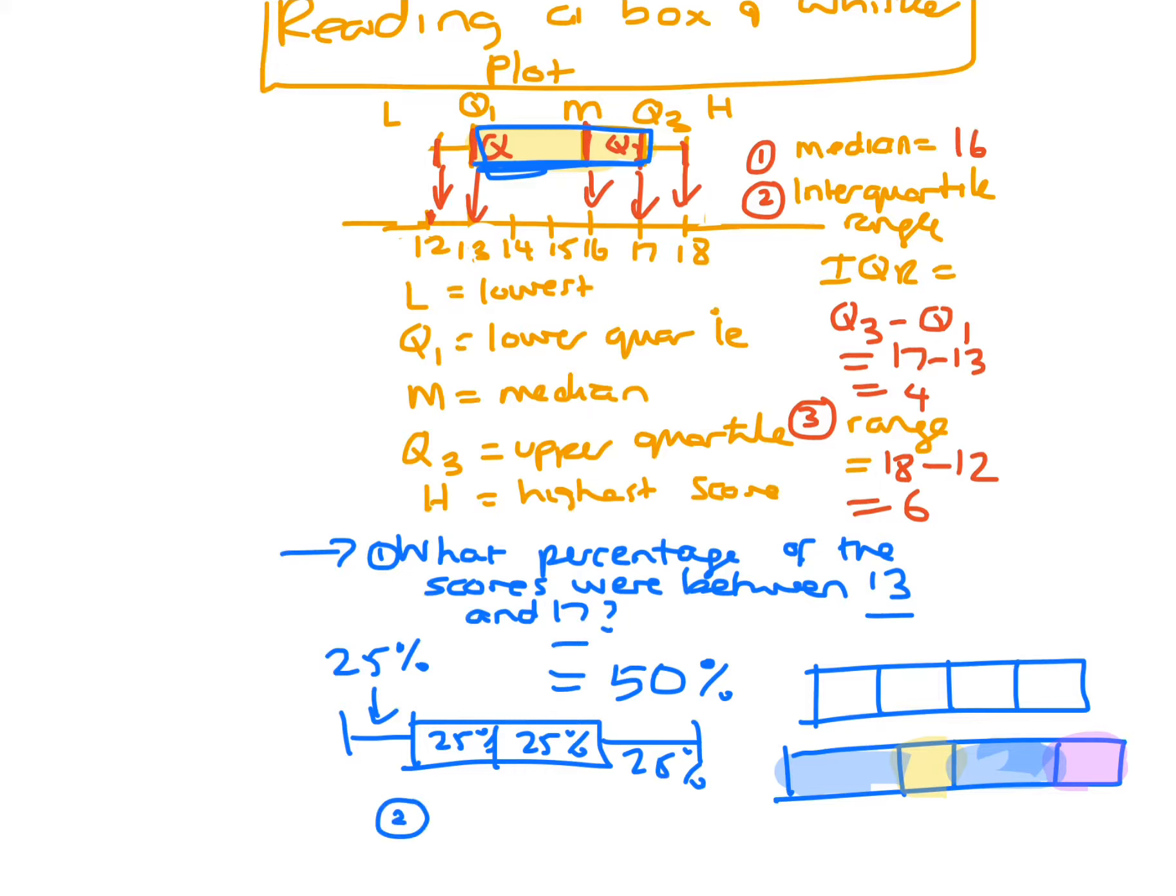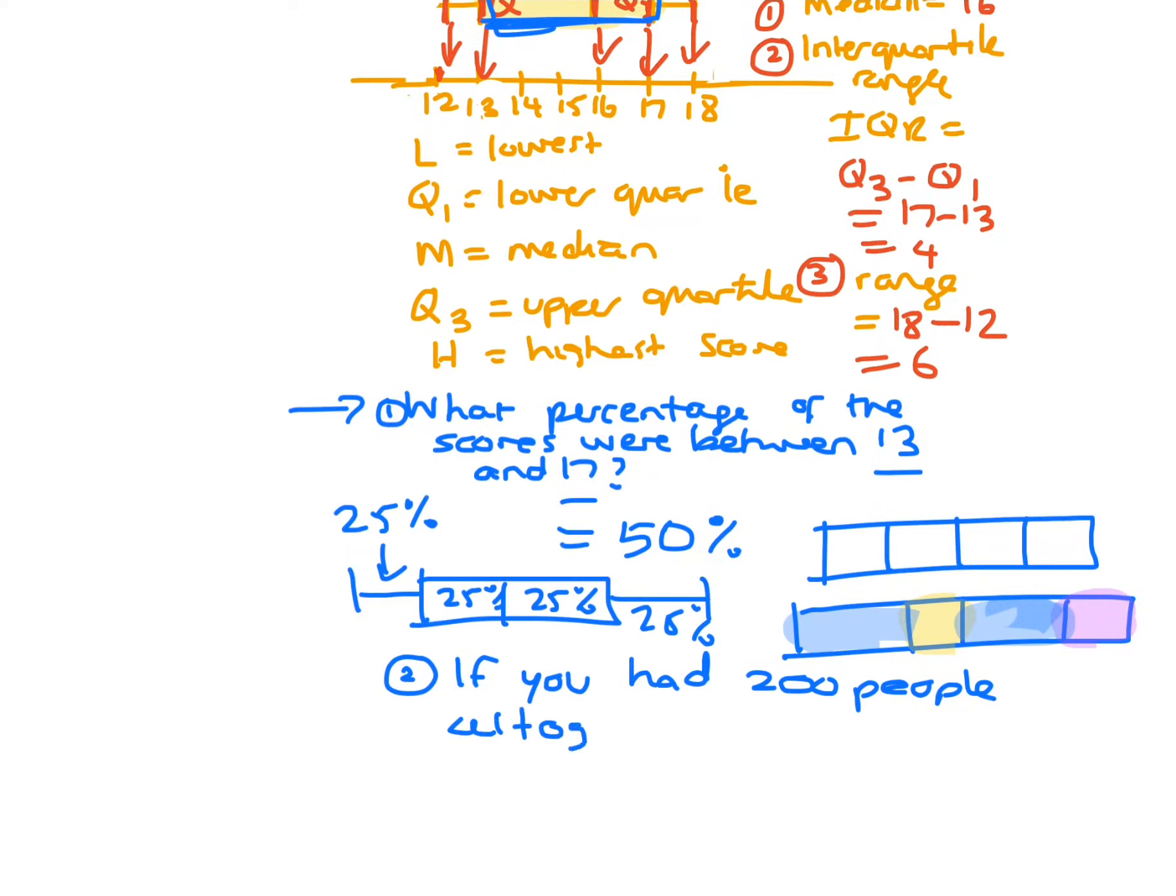And further on that, if you had, let's just say we have 200 people all together with this data. And how many people, let's just look at a couple of different options. How many people scored between 13 and 17.